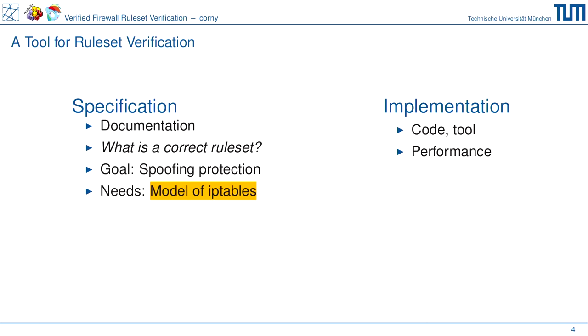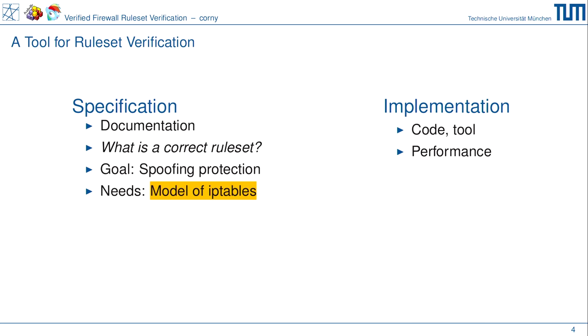Zum Beispiel werden wir über Spoofing-Schutz reden — das Ziel ist, unsere Firewall soll Spoofing-Schutz haben. Dafür brauchen wir ein Modell für die Paketfilterung von iptables. Das Modell sollte ausdrucksstark sein, so dass wir ablesen können, dass es wirklich was mit der Realität zu tun hat, und wir können alle spannenden Sachen für iptables-Erweiterungen in diesem Modell darstellen. Wir wollen einen Isabelle-Beweishelfer benutzen, weil Spezifikationen meist nur eine Lüge sind — in Wirklichkeit haben Spezifikation und Implementierung nichts miteinander zu tun.